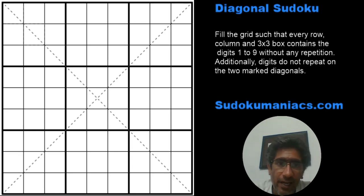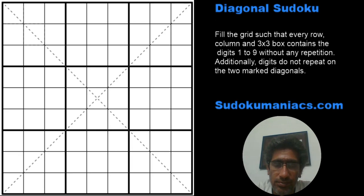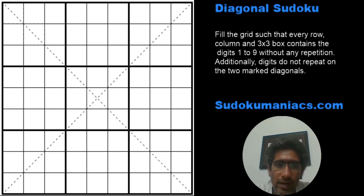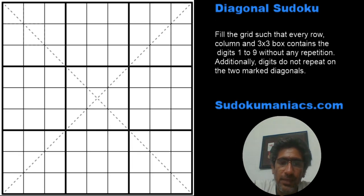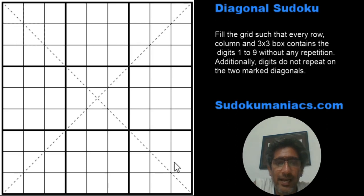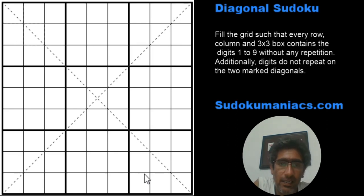When we have additional constraints — for example, here the digits cannot repeat on the diagonal line — there are some additional techniques we use when solving. One thing I notice is that since the digits cannot repeat on the diagonals, these diagonals form an extra region where the digits 1 to 9 will occur exactly once.